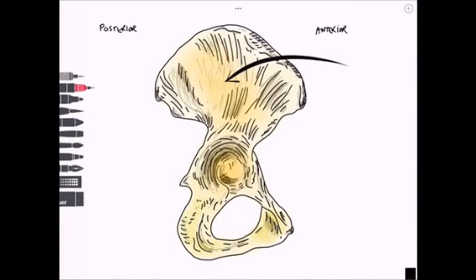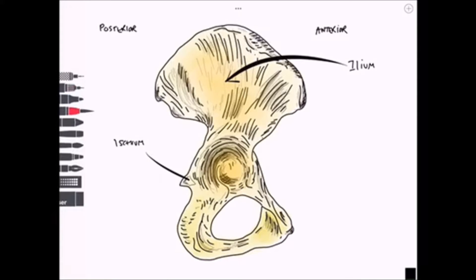Let's start off with the major bones. We've got the ilium, which is related to the gluteal region posteriorly and is the most superior. We have the ischium, which consists of a large body and a ramus which connects to the pubis. The pubis is its own bone and has a body and two large rami.